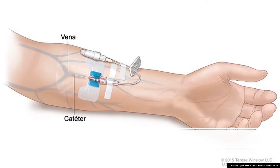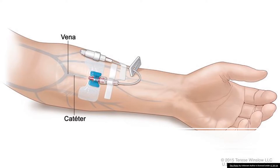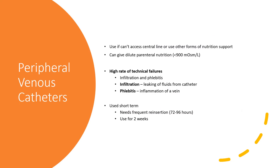Here's a picture of a peripheral line and here's a picture of a central line. Peripheral lines are used for TPN if a central line can't be accessed or if the patient is unable to use other forms of nutrition support.